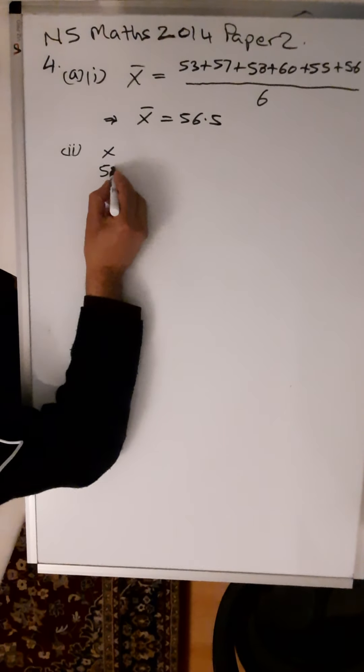Squaring 3.5 again gives you 12.25. Squaring -1.5 gives you 2.25. And squaring -0.5 gives you 0.25.